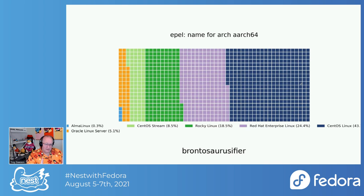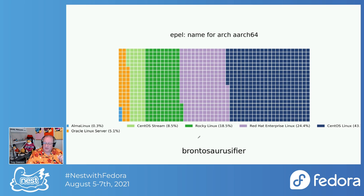Starting with aarch64 — and again, this is just aarch64 — CentOS Linux has the majority. Red Hat Enterprise Linux has a very big chunk of that. And then the cool thing: Rocky Linux has 18.5%. It hasn't been around very much, but for aarch64 Rocky Linux is doing really well — it's even beating out CentOS Stream. Then we have Oracle Linux and Alma.